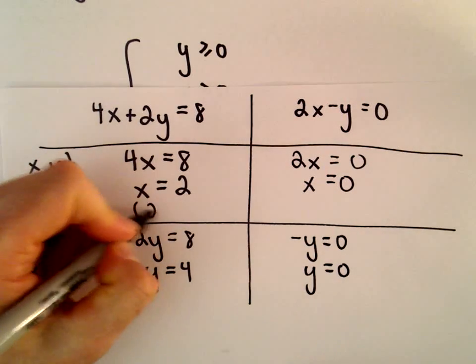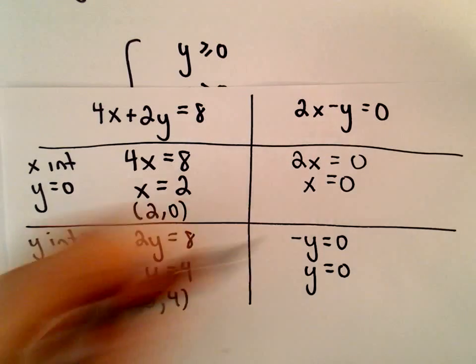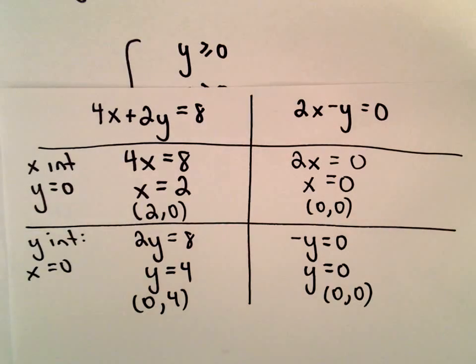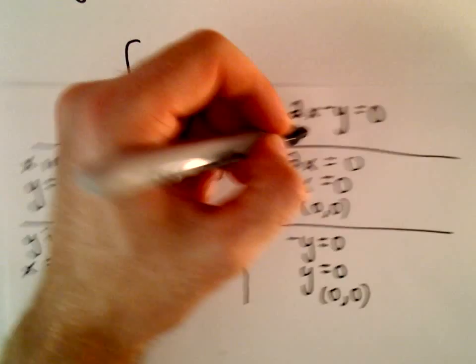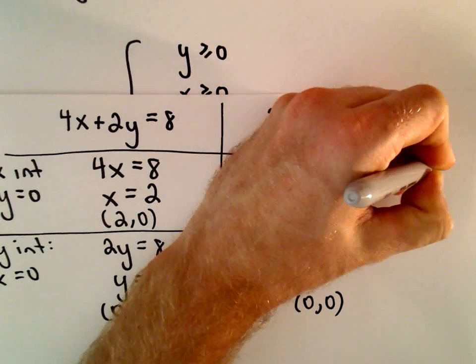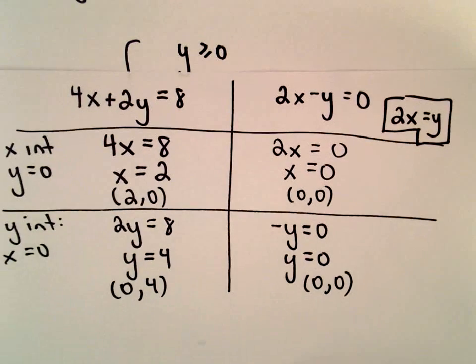So here we're getting a point 2, 0 and 0, 4 on our line. But for our second line, we're only getting the point 0, 0 and again we're getting 0, 0. So what we can do, though, 2x minus y equals 0, we could always write that as 2x equals y. And then we can graph it just using slope-intercept form.